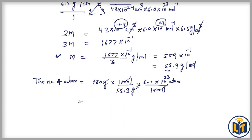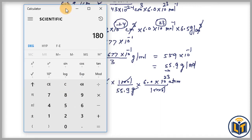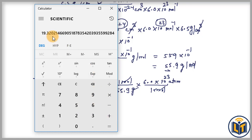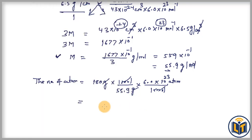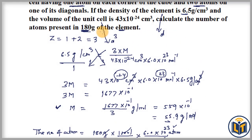At the top we have 180 multiplied by 6.0, and at the bottom we have 55.9. Dividing gives 19.32, so the number of atoms equals 19.32 × 10²³ atoms. These are the total number of atoms present in 180 gram of the element.